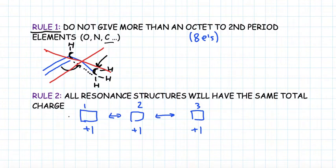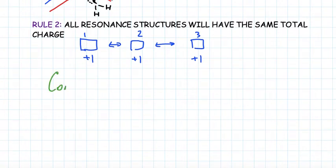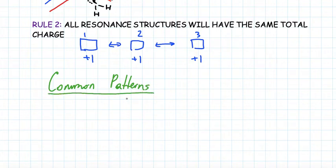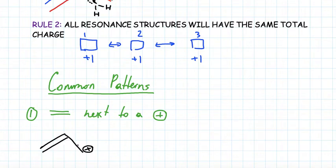Now that we went through all of the rules, let's look at common patterns for resonance structures. The first common pattern is when we have a double bond next to a positive charge. We can move electrons from the double bond — a place with extra electrons — to the positive charge — a place lacking electrons. So this arrow from the double bond toward the positively charged carbon is possible.